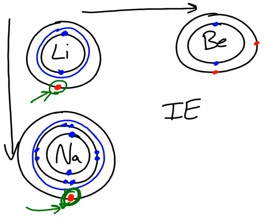When it comes to going across a period, there isn't necessarily shielding going on because it's the same number of core electrons. I still have two core electrons for both lithium and beryllium. So shielding, for the most part, does not have an effect on periodic trends going across a period. The reason why ionization energy is lower in lithium than in beryllium is because beryllium has more protons. Ionization energy is supposed to increase as you go from left to right.